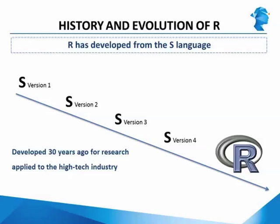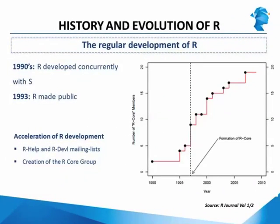R has essentially developed from version 4 of S, and it comes from the needs of applied researchers with sophisticated mathematical needs to produce an advanced technology solution for the high-tech industry. We can find the influence of S version 4 in R, which is a programming language well suited for both research and industrial application. The development of R started at the beginning of the 1990s, initially kept confidential, but was made public in 1993.